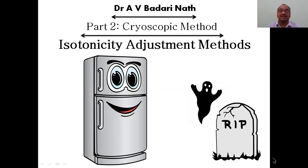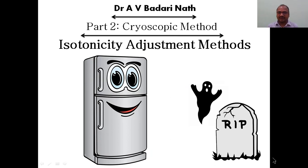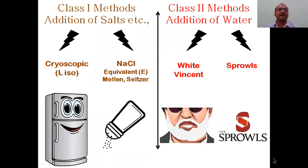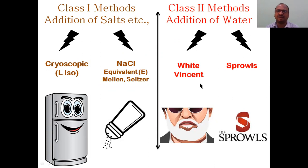In this principle we are adjusting the isotonicity of the given IV infusion formulation using the principle of its freezing point. We check the freezing point and according to that we add NaCl. There are four methods total: class one methods include cryoscopy and NaCl equivalent method; class two methods include White-Vincent method and Sprowls method. Class one methods involve addition of salts; class two involve addition of water.